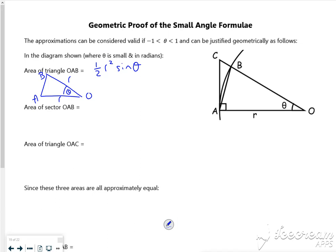The area of the sector from O to A to B, same idea, is a half R squared theta.